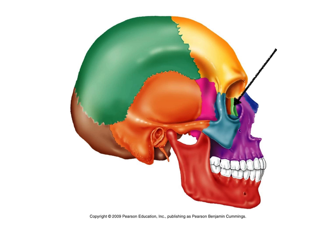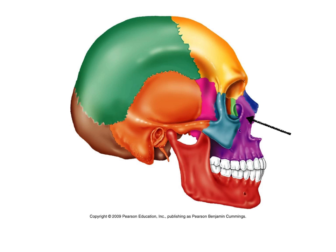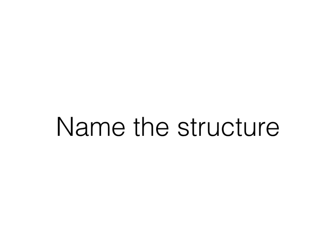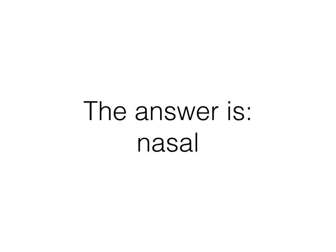This time the green one. That is the lacrimal bone. And this time the purple one. That is the maxilla. And finally the blue one on the tip there. That is the nasal bone. Remember my little phrase: 'nosy max laments ethics.' That'll help you remember those in order. It can get a little bit busy in there in the orbital area, so that might help you.